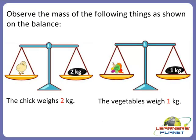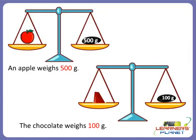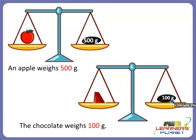Let's observe the mass of the following things as shown on the balance. The chick weighs 2 kg. The vegetables weigh 1 kg. An apple weighs 500 grams because it is smaller, so it is measured in grams, not in kg. A small chocolate weighs 100 grams.